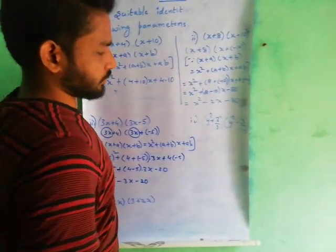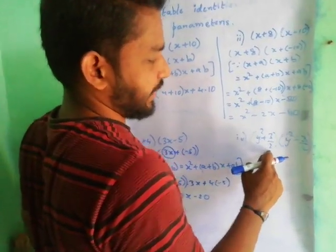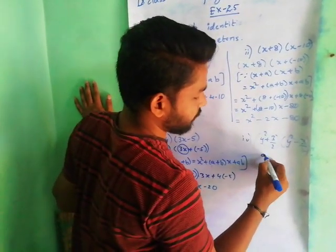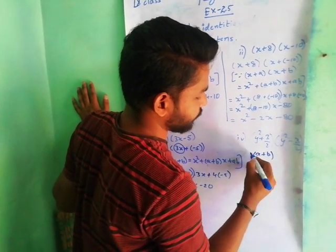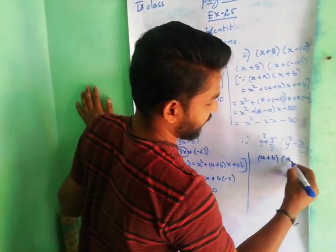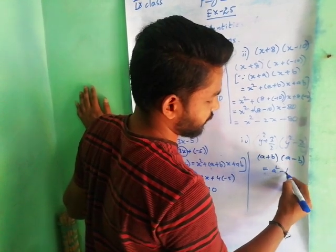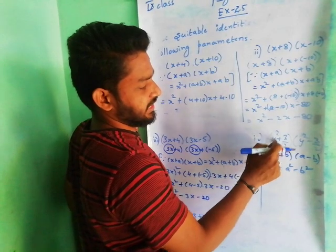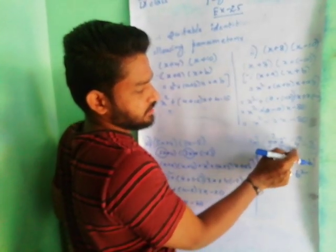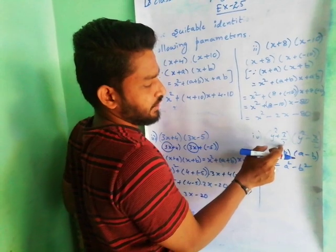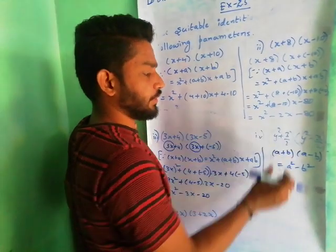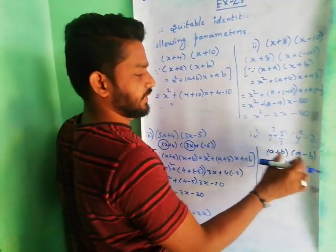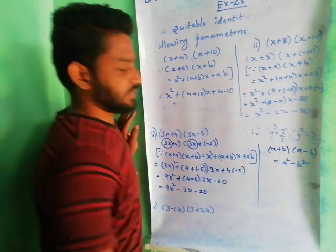Coming to the fourth one: y square plus 3 by 2 into y square minus 3 by 2. Observe that it looks like a plus b into a minus b. a plus b into a minus b is equal to a square minus b square. Here a value is y square, and b value is 3 by 2. It looks like a plus b into a minus b.